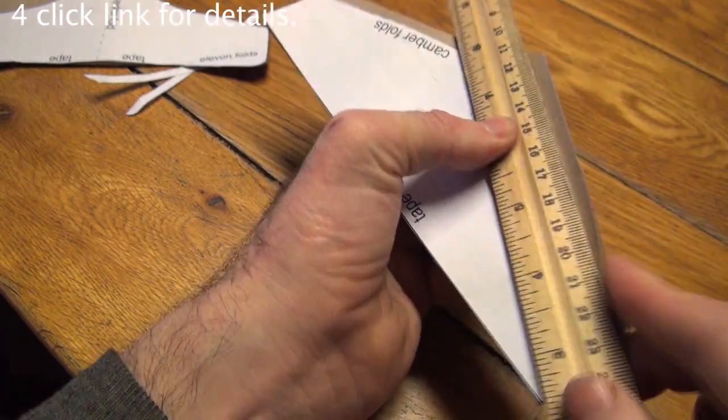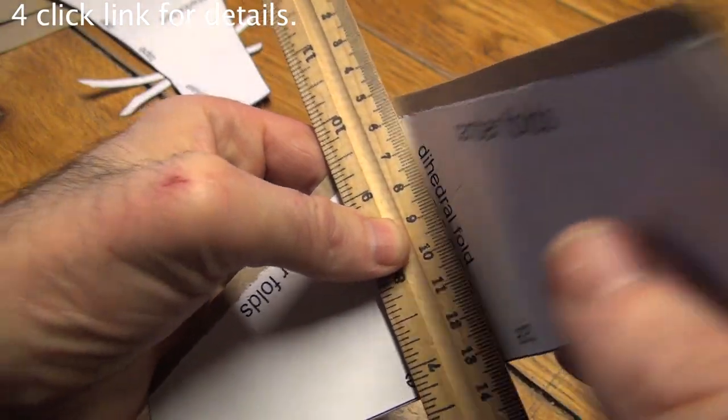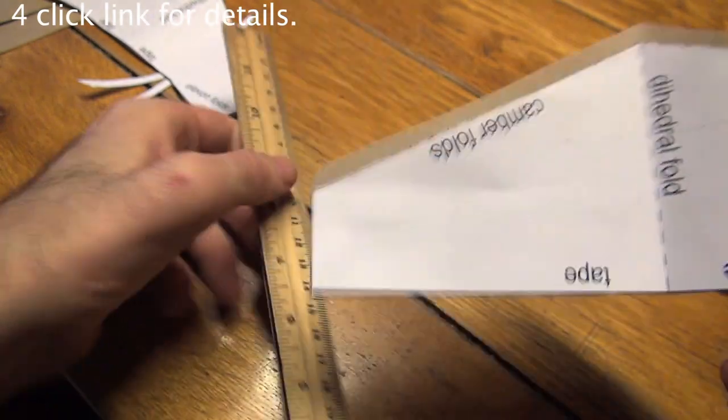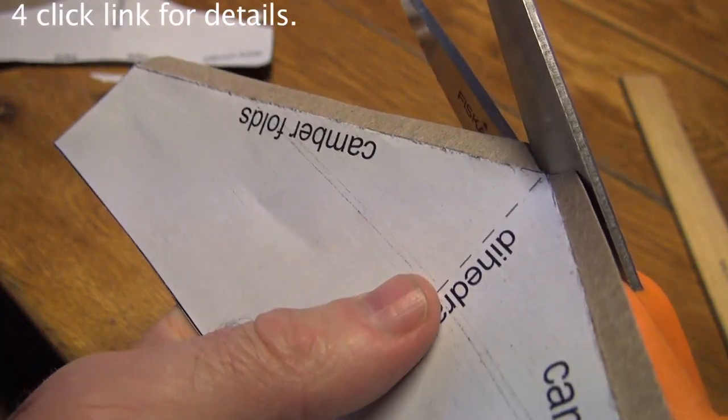I actually bend the wrong way first, then the other way. This dashed line shows where a slight dihedral bend will be put into the wings. Cut a chunk out of the front.